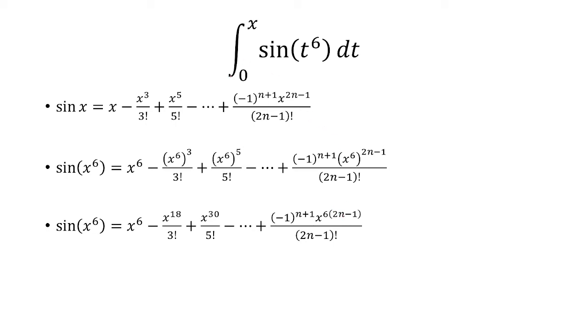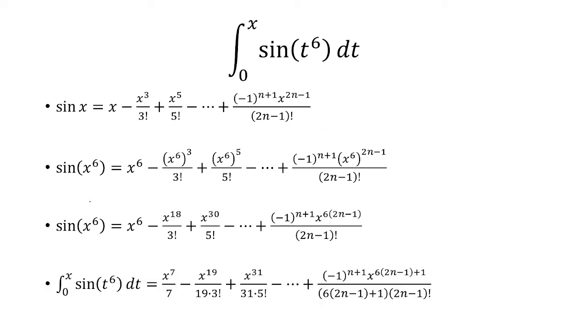Finally, we have to integrate this. So integrating both sides, the antiderivative of x to the 6th is x to the 7th over 7. And then you're basically adding 1 to the exponent and dividing by that new exponent.